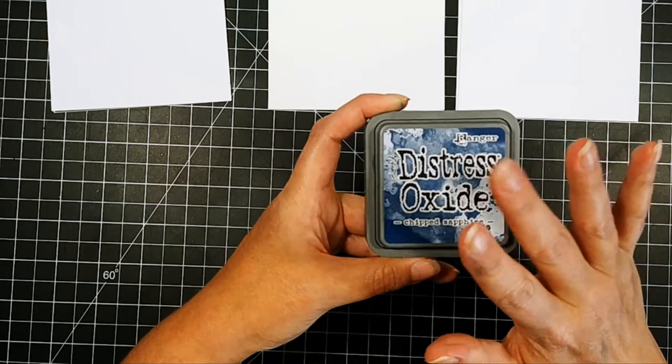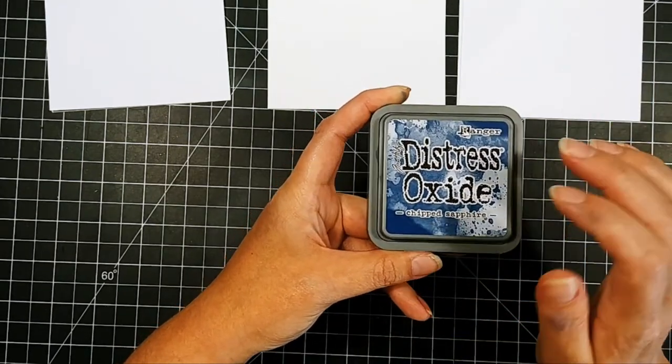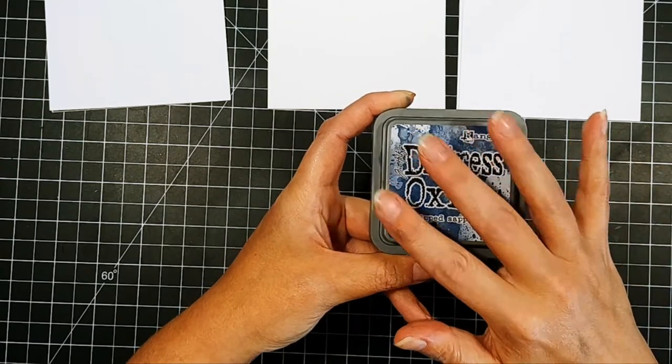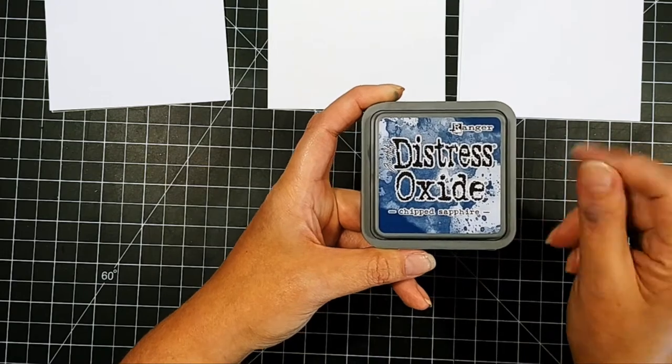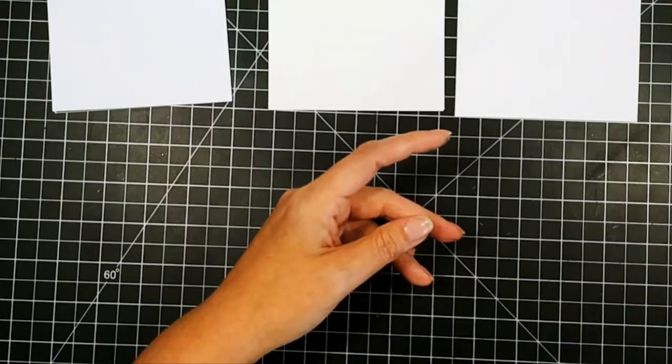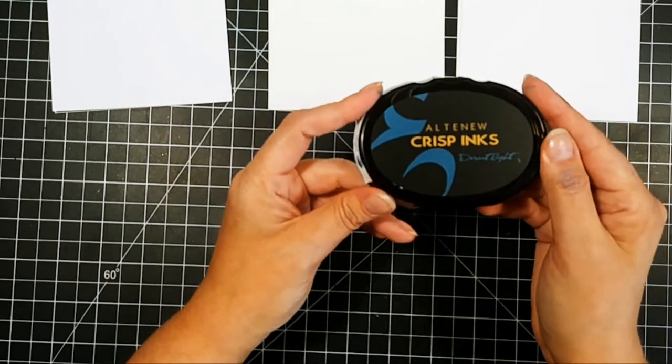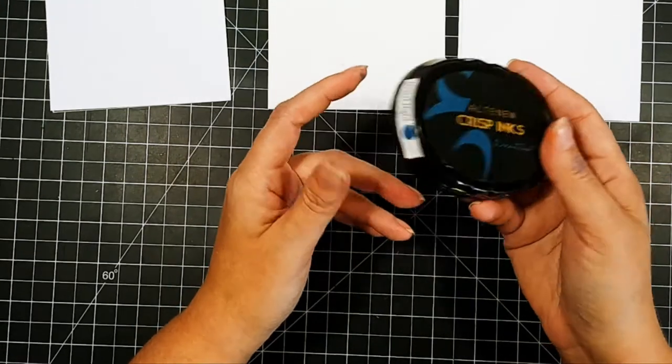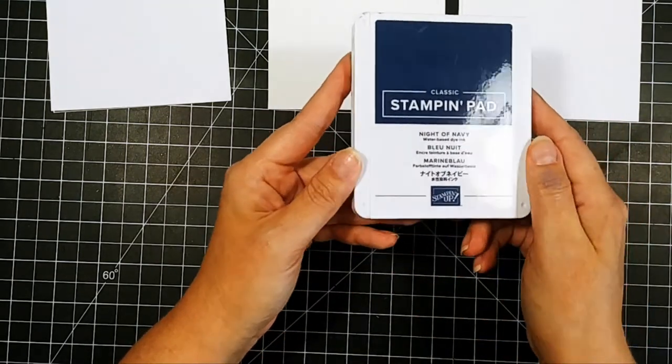This is going to give you more coverage and that more velvety coverage as well. Then I have an actual just plain old dye ink, which is an Altenew Crisp ink in Desert Night. And then I have a Stampin' Up Ink Night of Navy.